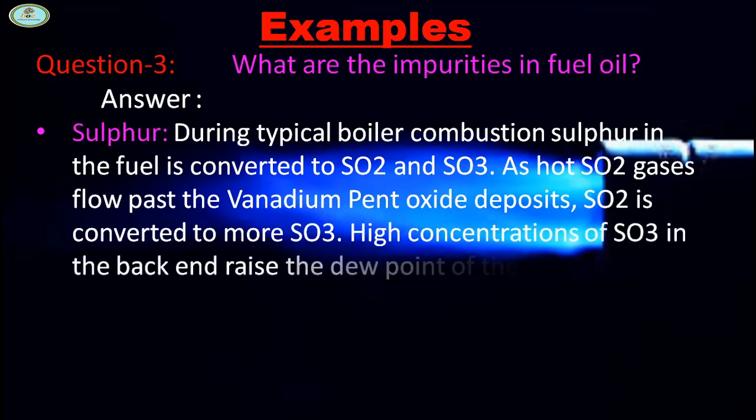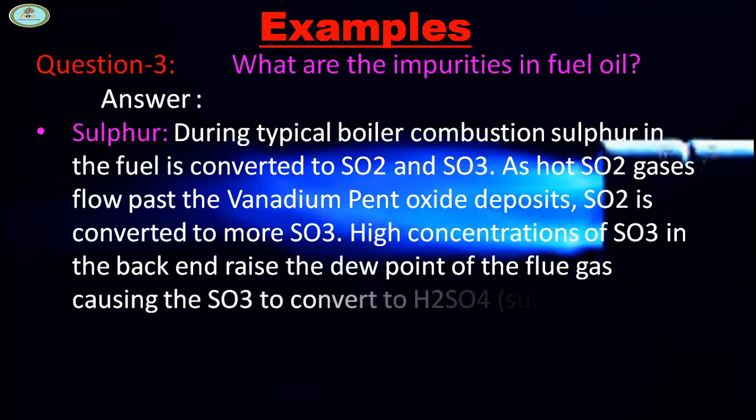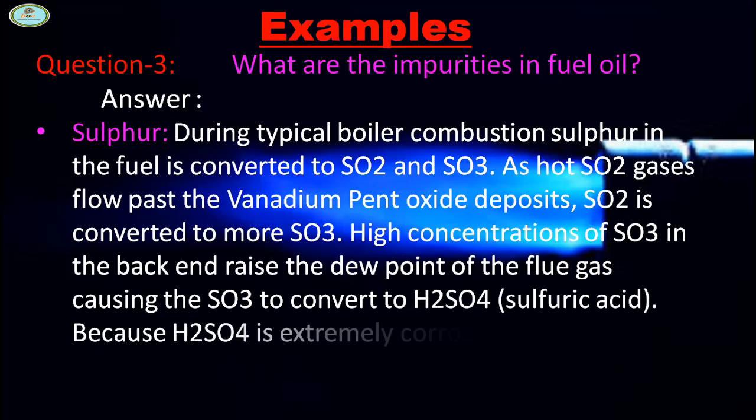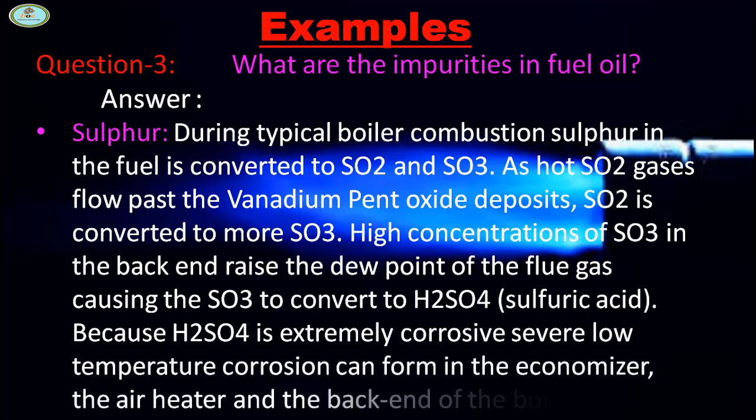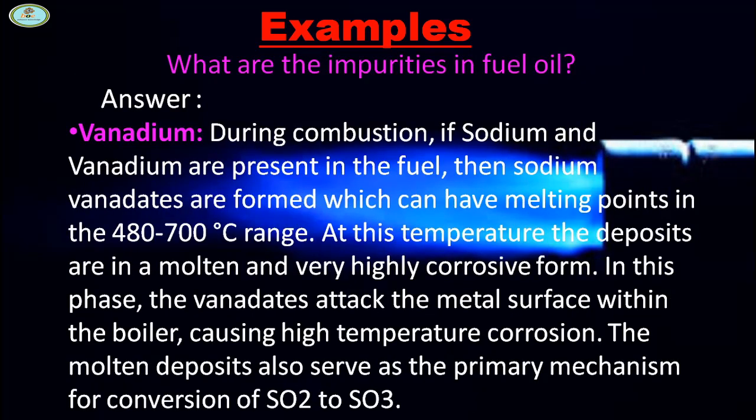As hot SO2 gases flow past vanadium pentoxide deposits, SO2 is converted to more SO3. High concentration of SO3 in the back end raises the dew point of the flue gas, causing SO3 to convert to H2SO4. Because H2SO4 is extremely corrosive, low temperature corrosion can form in the economizer, air heater, and back end of the boiler.